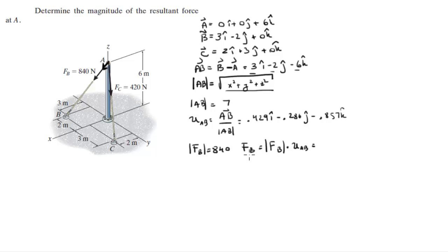So multiplying 840 by these three values is gonna give you 360 I minus 240 J minus 720 K. And that's our first Cartesian vector, which is FB. Now we're gonna do the same thing to find F of C.